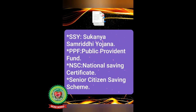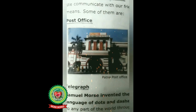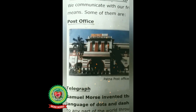All the people can take benefit of these schemes, like SSY — Sukanya Smriti Yojana, PPF — Public Provident Fund, NSC — National Savings Certificate, and Senior Citizen Saving Scheme. Senior citizen means a person who has attained the age of 60 years or above. This is Patna Post Office, and all the states have their own post offices.